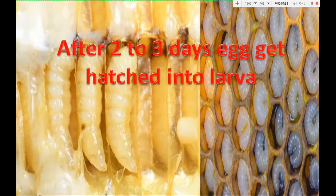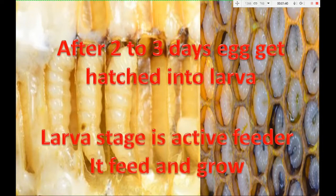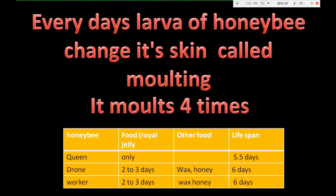Queen bee lays eggs singly in each cell of the hive. After two to three days, the egg gets hatched into a larva. The larva stage is an active feeder — it feeds and grows. Every day, the larva of a honeybee changes its skin, called molting.